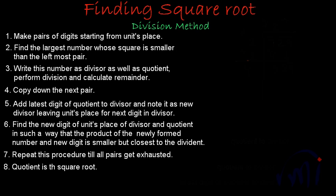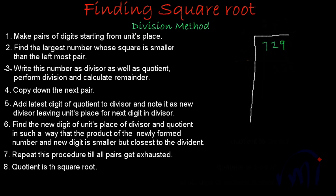Suppose the number for which we want to find the square root is 729. As we do in division, we will draw these lines to perform the division of this number. The first step of the procedure says: make pairs of digits starting from the units place. So this will be one pair and this will be another pair.